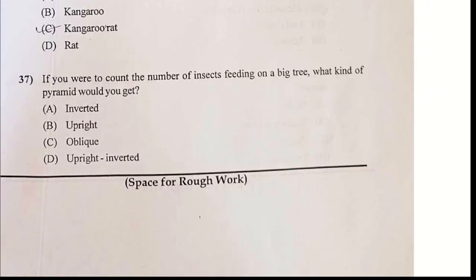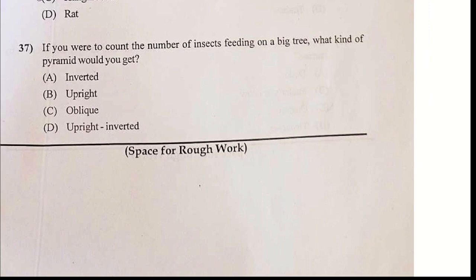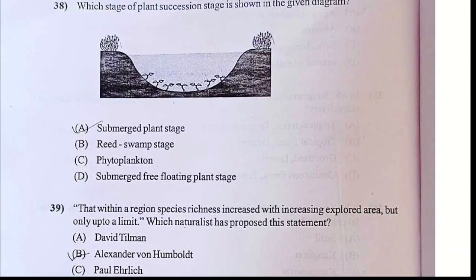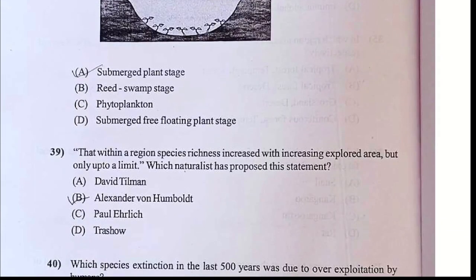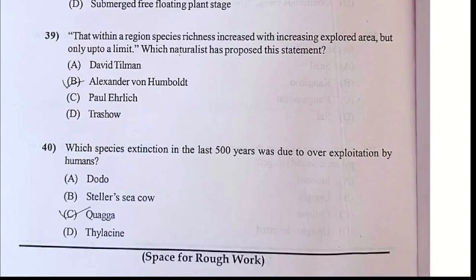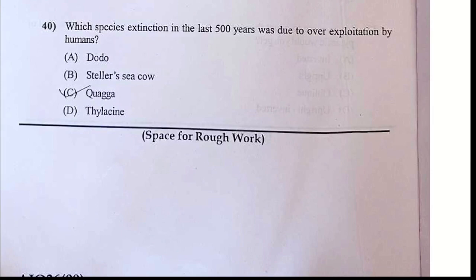The feeding of the beet free — what kind of pyramid should be inverted? Your answer is upright. This is called the submerged plant stage — not free floating, submerged plant stage. This is Alexander von Humboldt. This one is Steller's sea cow.